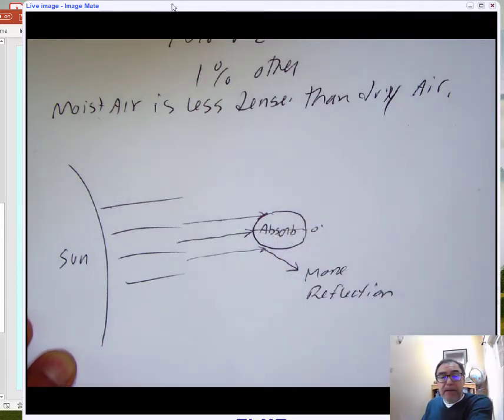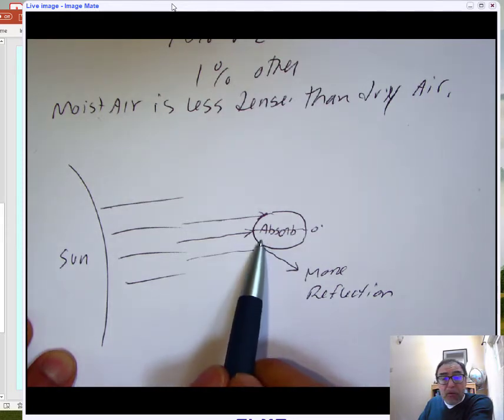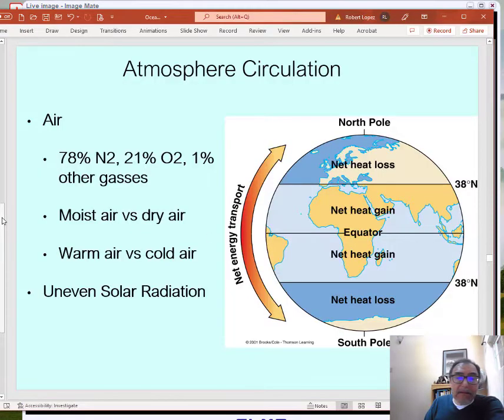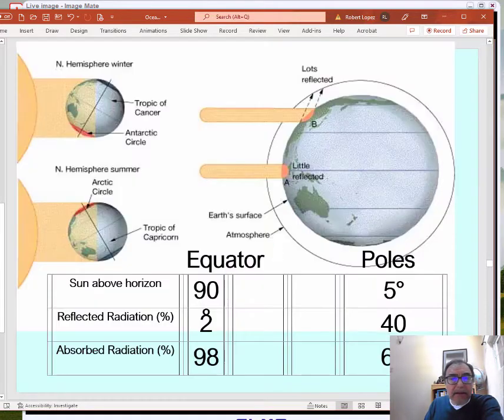Because near the equator, there's going to be more solar radiation that's absorbed and then more reflected off or bounced off at the higher latitudes. So that's why Earth gets a net heat gain in the middle latitudes and there's a net heat loss higher up in the poles.